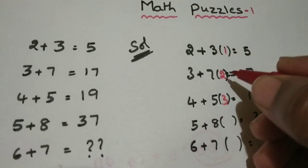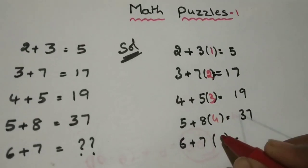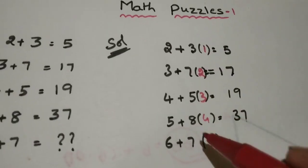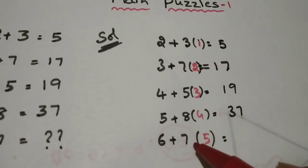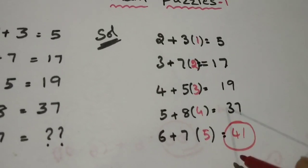Like this 1, 2, 3, 4, all will come in sequence. So the answer will be 6 plus 7 into 5. 7 into 5 is 35, 35 plus 6 is 41. So the answer is 41.